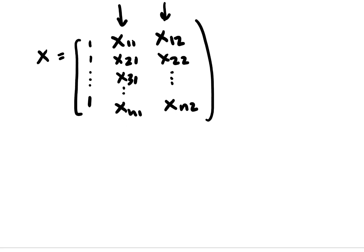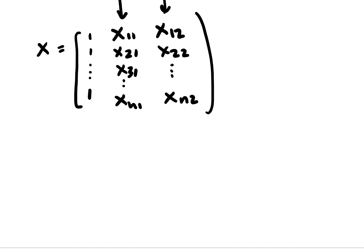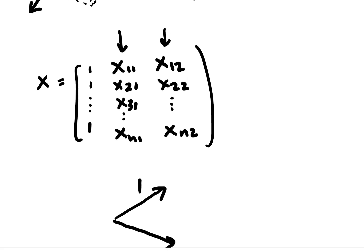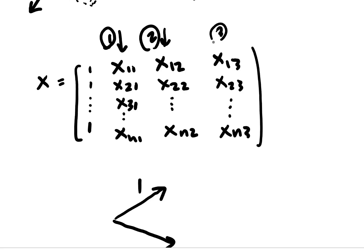So each column of x represents a vector in space. What we can do is we can draw a vector for each one of these columns. So this would be like the first column, second. Let's actually do three. So x13, x23, xn3. So then this would be the third column.